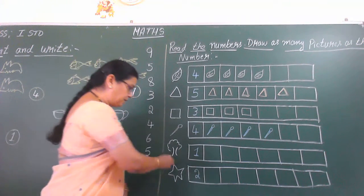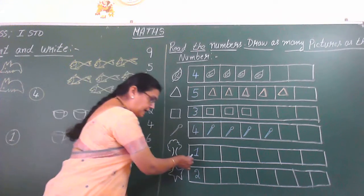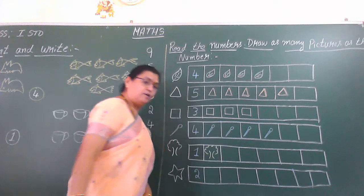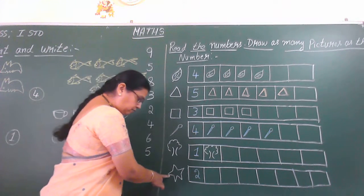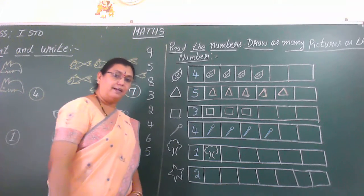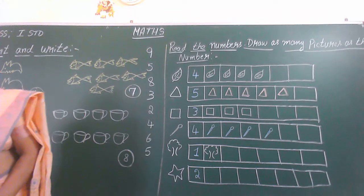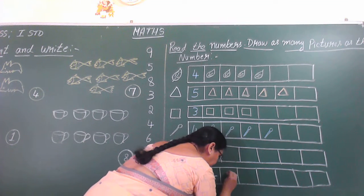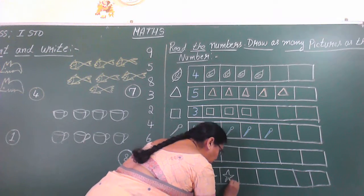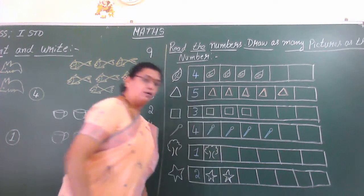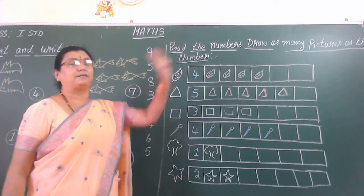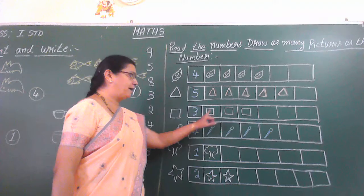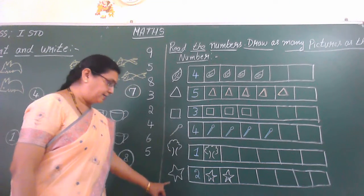How many children? Four. How many trees they have given? What is the number they have given? They have given only one. So we have to draw only one tree. Last one, what is this? This is star. Which number they have given? They have given number two. So we have to draw two stars. One, two — we have to draw two stars. What we did: read the numbers and draw as many pictures as the number. Four leaves, five triangles, square three, spoon four, tree one, and star two.